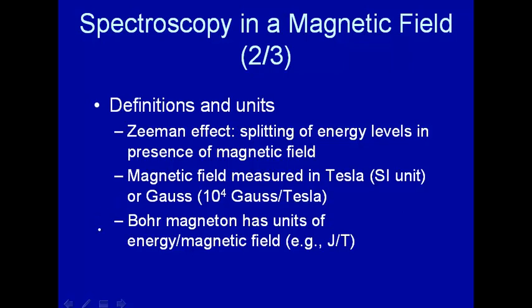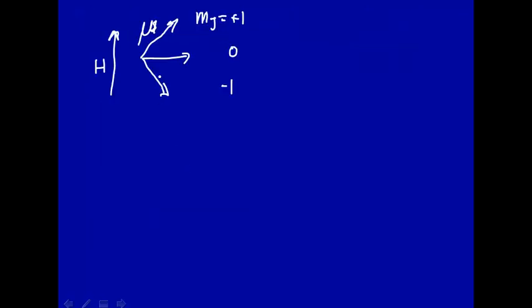The third useful quantity here is called the Bohr magneton. As we said, depending upon how the magnetic dipoles align with the external magnetic field, you have a different energy. So you have to have some conversion between magnetic field and energy, and that's what the Bohr magneton is. It has units of Joule per magnetic field, or SI units Joule per Tesla.